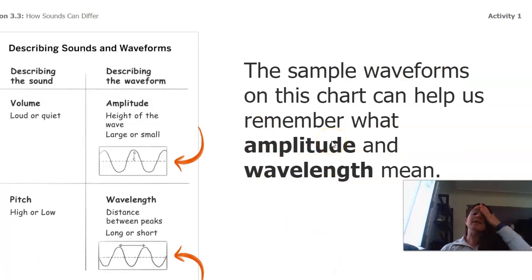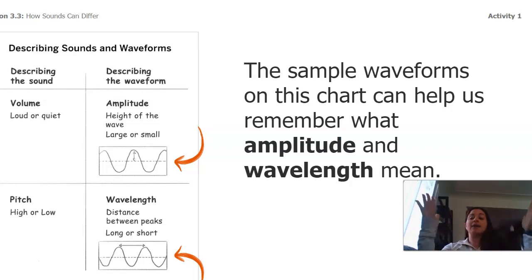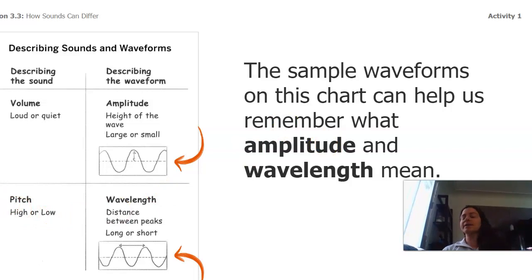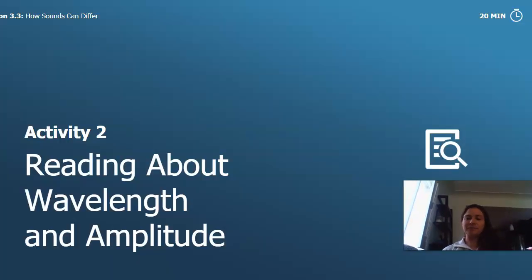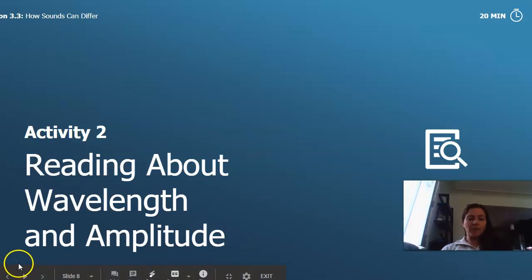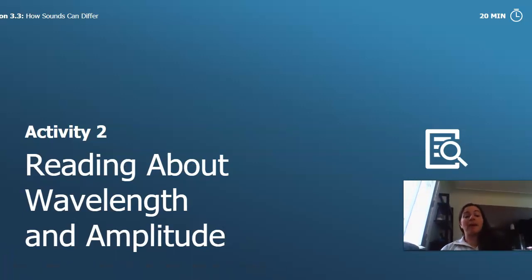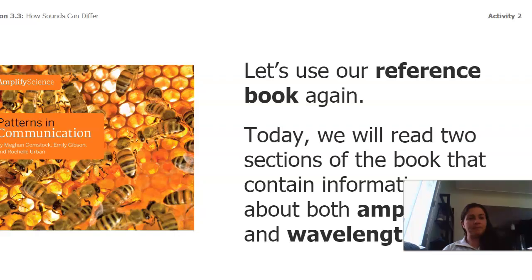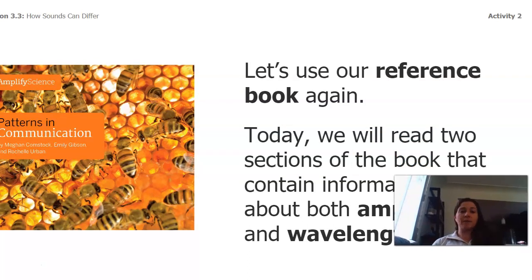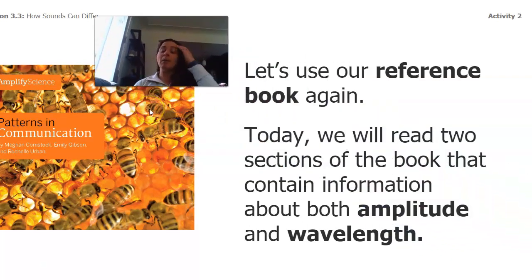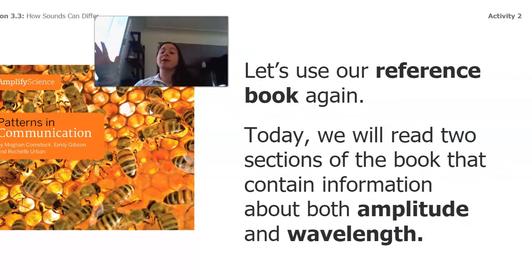The sample waveforms on this chart help us remember what amplitude and wavelength mean, and with a little bit of practice you are going to know these right away. Now we're actually going to go back into a reading from a book that we've done before — we're going to use our reference book again. We're going to read two sections that contain information about both amplitude and volume, and wavelength and pitch.